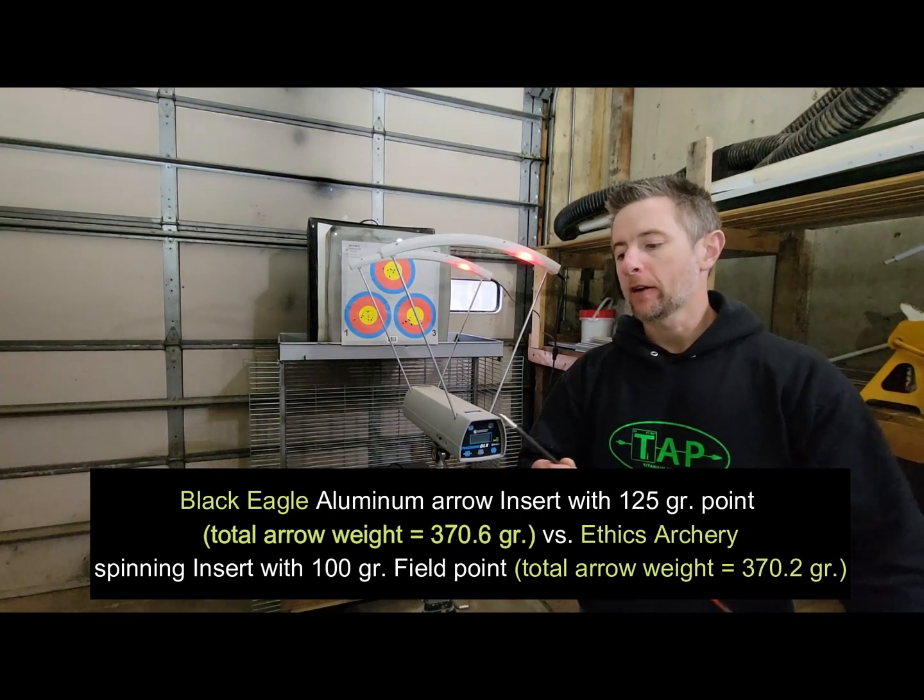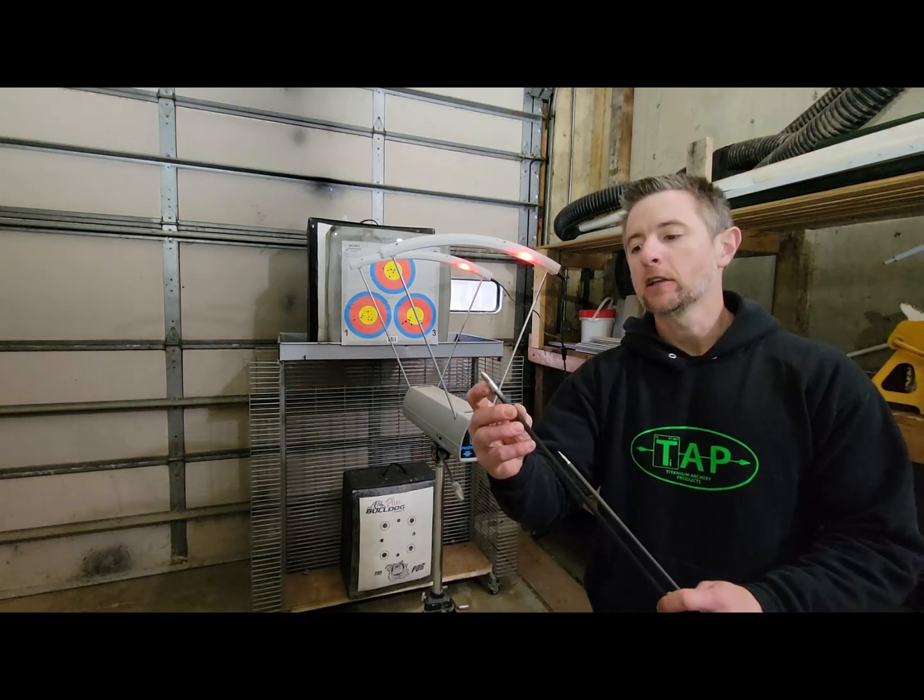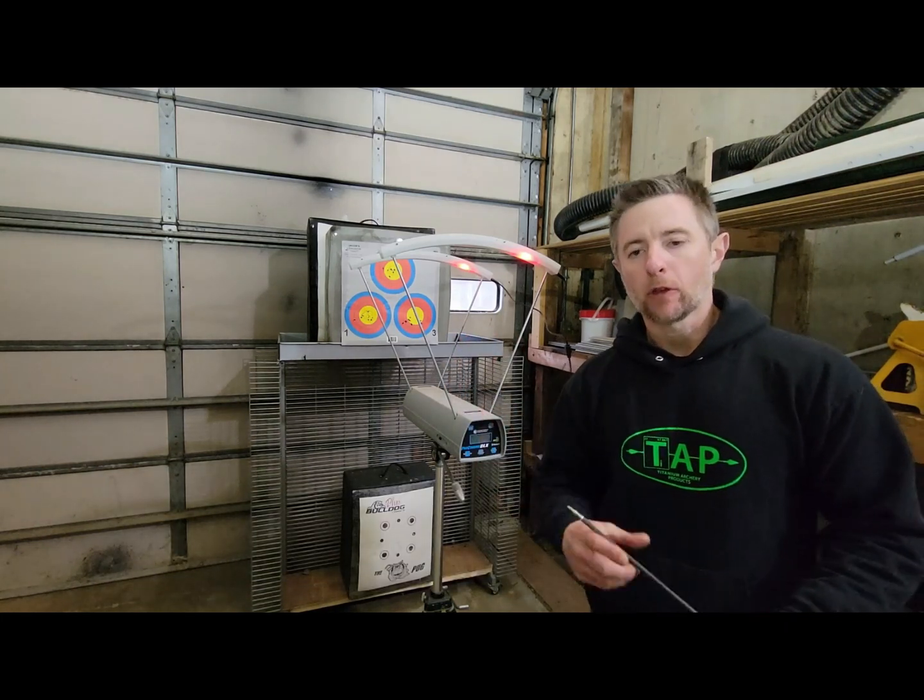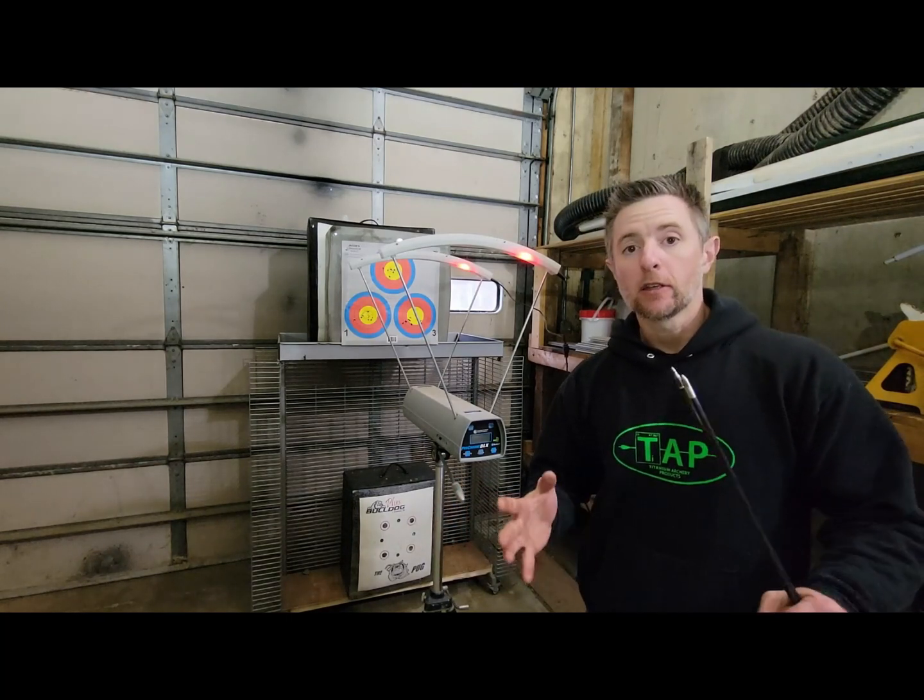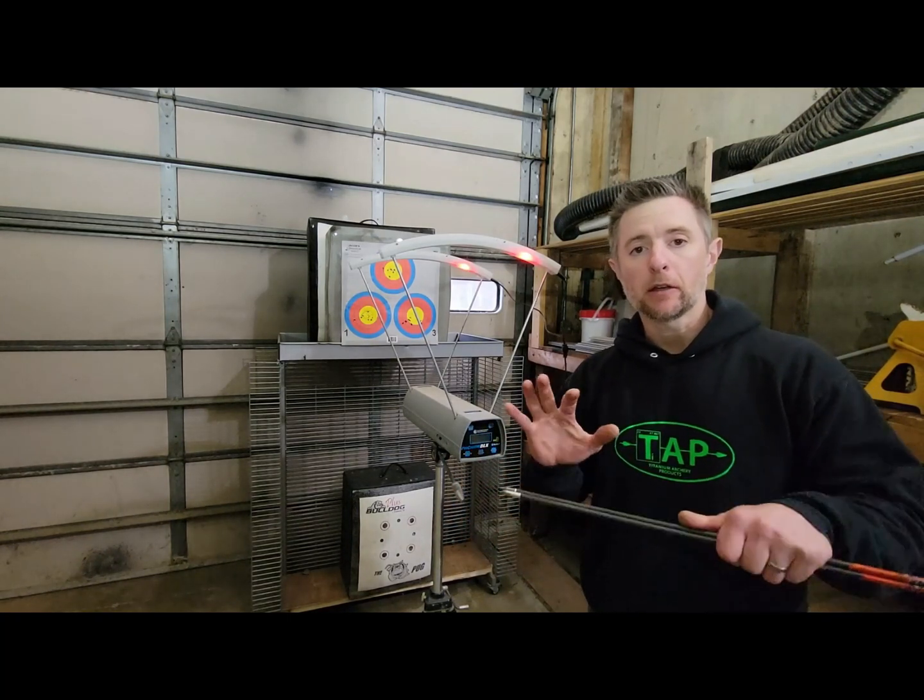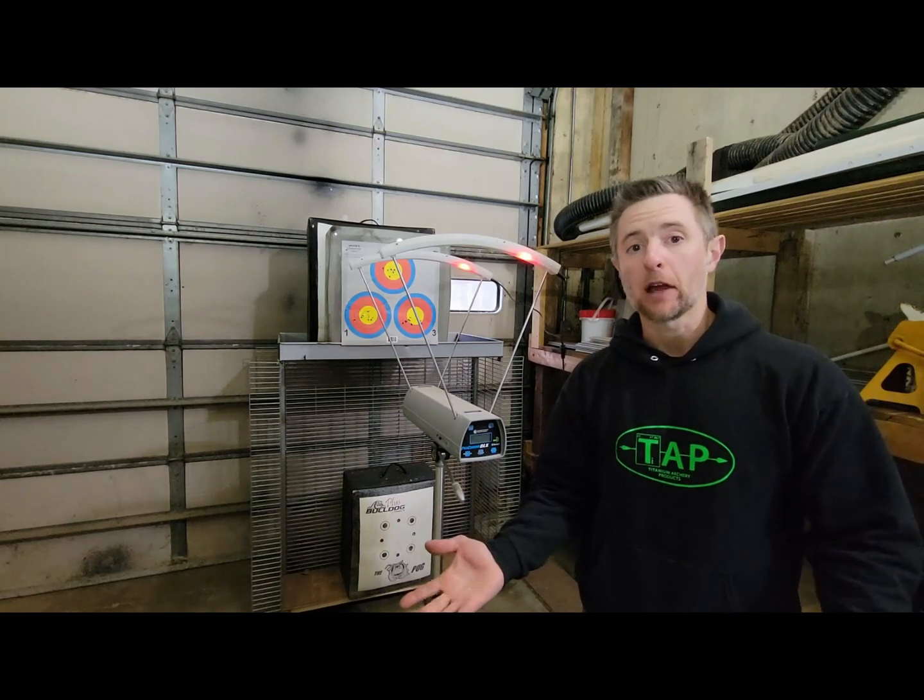This is one of their spinning inserts. It allows the field point to spin independent of the arrow. So why would you want to use this? What is the point? Is there a benefit? Well, it's claimed that an insert like this will allow the arrow to retain more of its downrange velocity and thus more of its downrange energy.